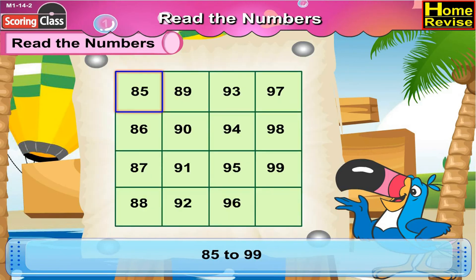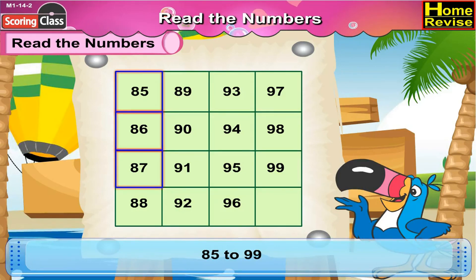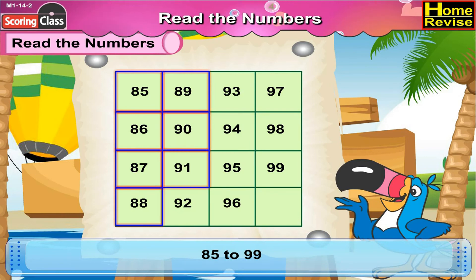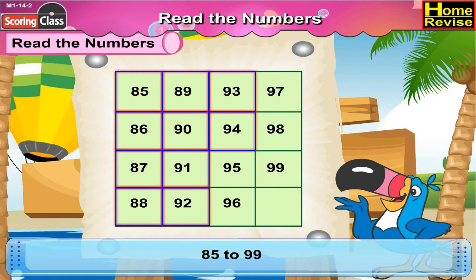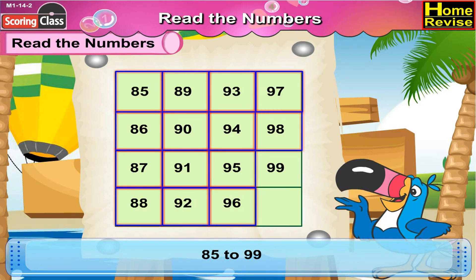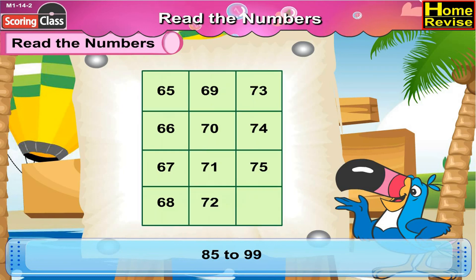Eighty-five, eighty-six, eighty-seven, eighty-eight, eighty-nine. Ninety-one, ninety-five, ninety-six, ninety-seven, ninety-eight, ninety-nine. Now from sixty-five to seventy-five.